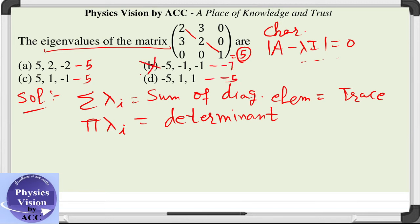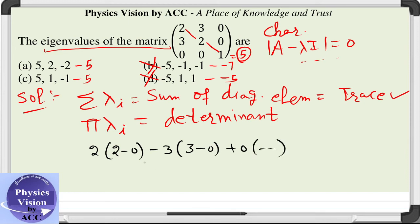Options b and d are incorrect for sure because their sum does not satisfy this first important property. Next, we are going to calculate the determinant, which is quite easy in comparison to solving a characteristic equation. The determinant is 2 into 2 minus 0 minus 3 into 3 minus 0, plus 0 into something. This gives us 4 minus 9, so the product is minus 5.